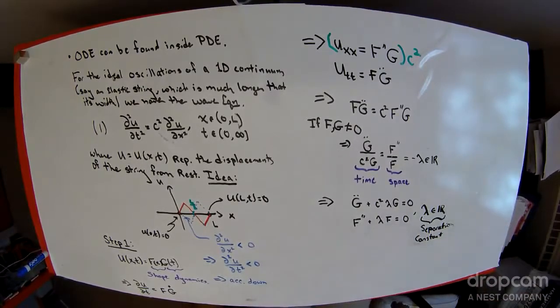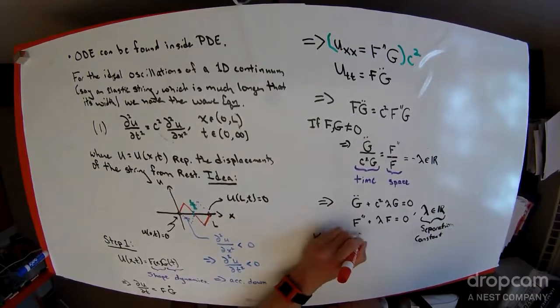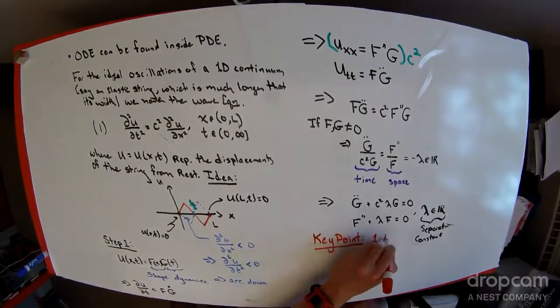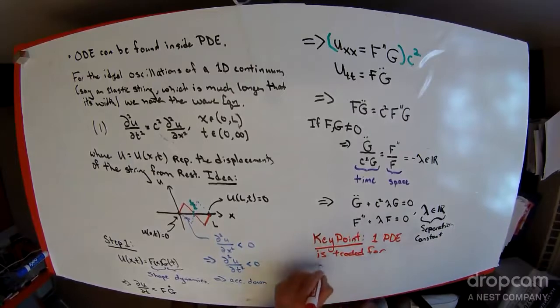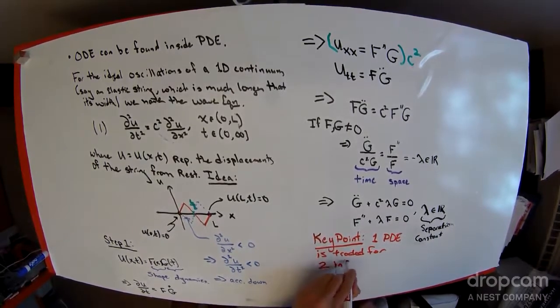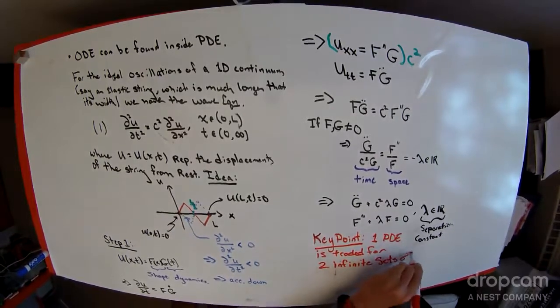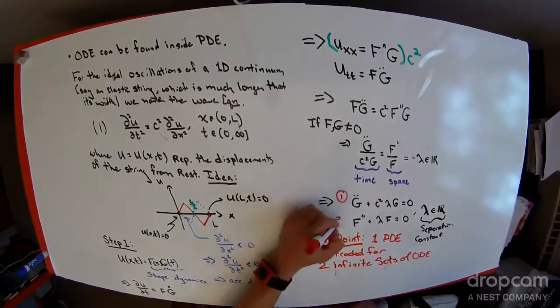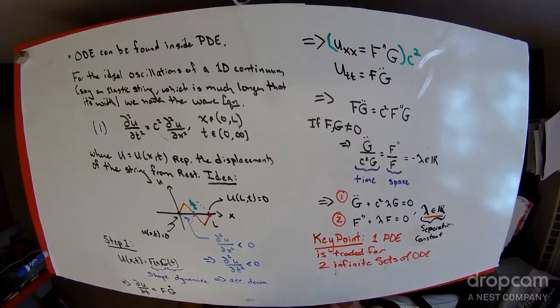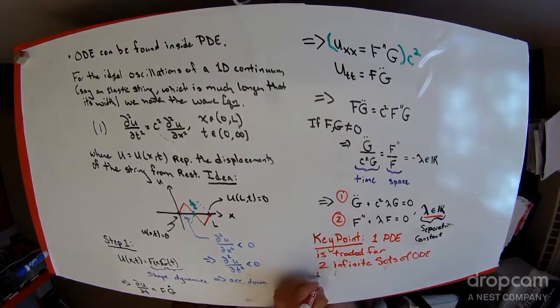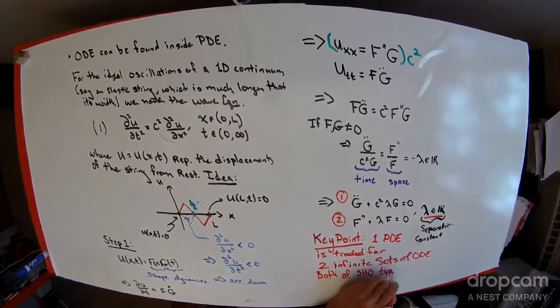This lambda could still be anything and this is called the separation constant. But the point here is that instead of one partial differential equation to solve, one PDE is traded for two infinite sets of ODE. There's one, there's two. Why infinite? This lambda could depend on anything. But the nice thing is both equations are harmonic oscillator equations, so they're both of simple harmonic oscillator type, which means we know how to solve both of them.